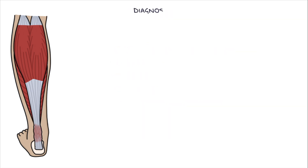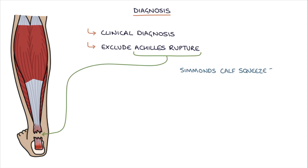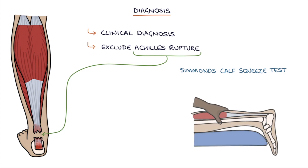Achilles tendinopathy is a clinical diagnosis and doesn't usually require any investigations to diagnose. It's essential to exclude Achilles tendon rupture, for example using the Simmons calf squeeze test. The Simmons calf squeeze test is a special test to look for Achilles tendon rupture or a break in the Achilles tendon. The patient is positioned prone or kneeling with the feet hanging freely off the end of the bench or couch.